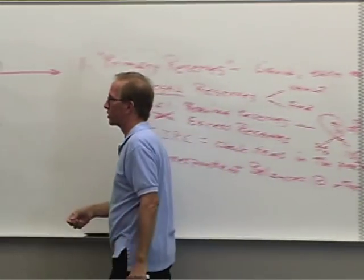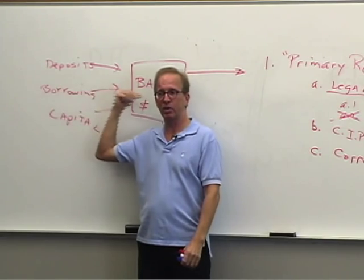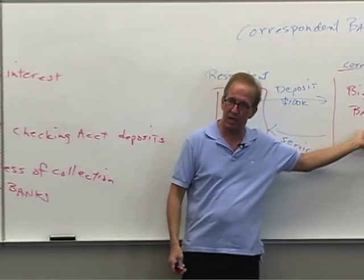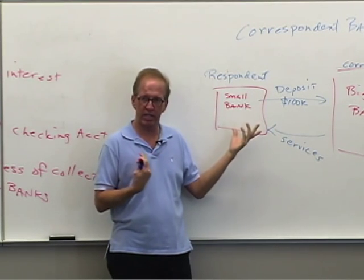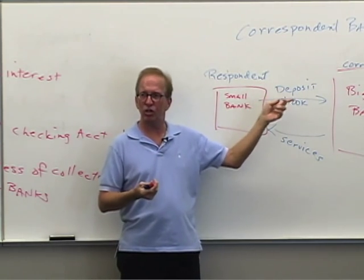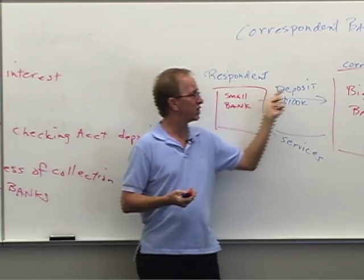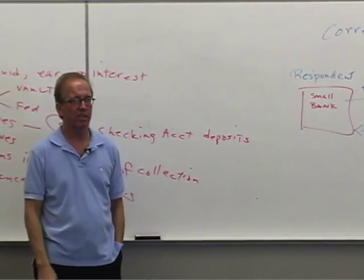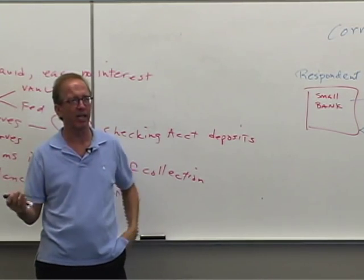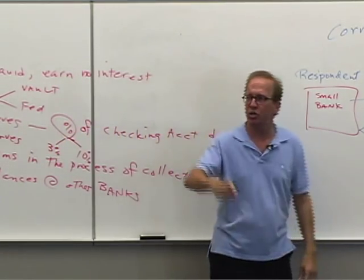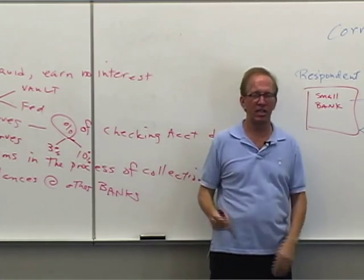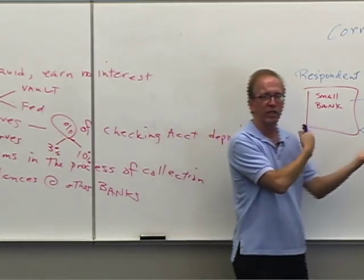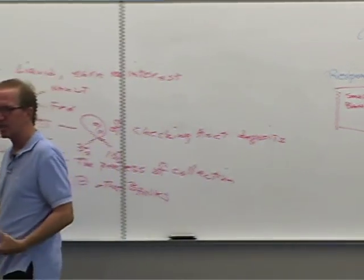Banks can also purchase Fed funds from other banks through the correspondent relationship. If the respondent bank has excess reserves sitting around earning no interest, it can sell those Fed funds to the correspondent, which pays interest on them. The arrangement can be set up so that at 4 o'clock every day, any excess funds are automatically transferred. This is a regular part of the correspondent relationship.